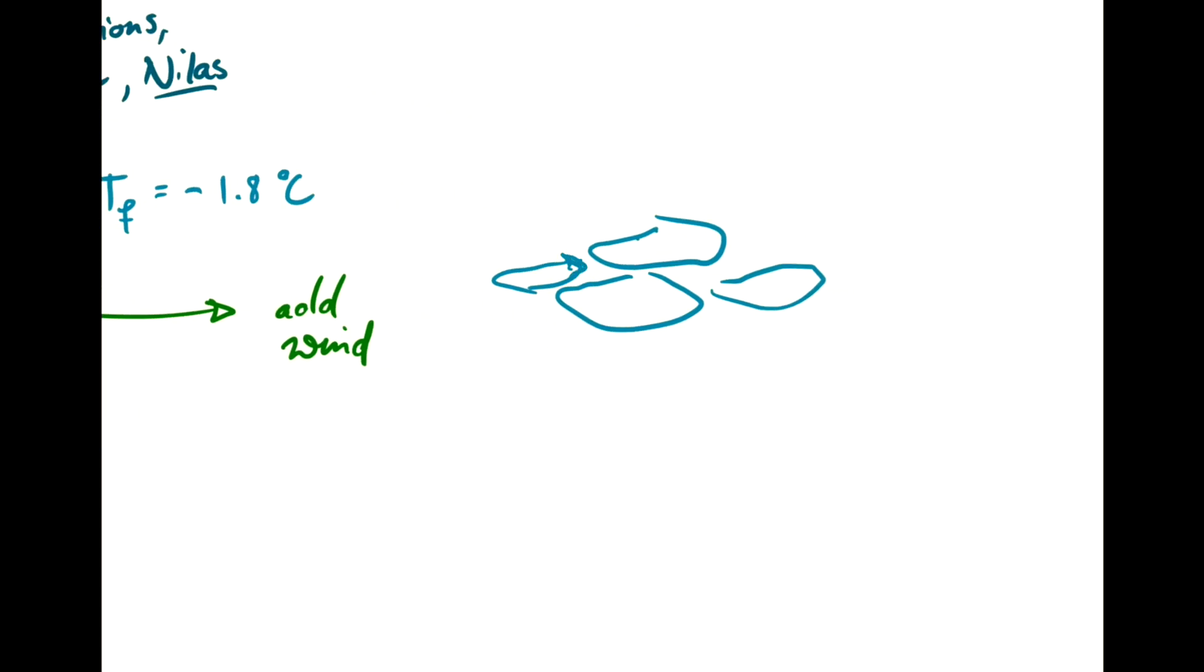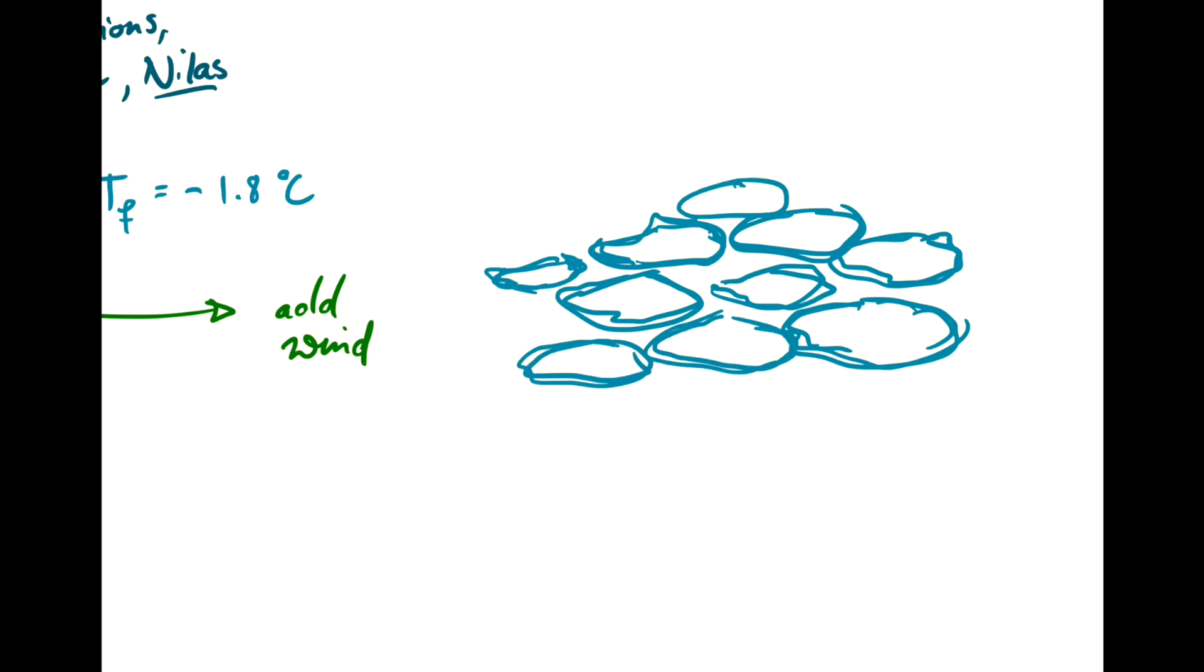And as a result, they tend to build up little borders, elevated borders. And because they're moved around rather randomly, they tend to form these circular disks, approximately circular disks with elevated edges.